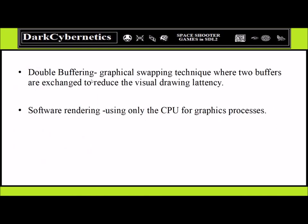Double buffering is a technique for reducing latency on the screen so we don't have a flickering effect, making the screen look stable and smooth. Software rendering, as we did not go over before, talks about graphic processing — you're just using the CPU for that. If you're familiar with DirectX or other graphical systems, there are other ways of doing this; Java has its own functions for that as well.